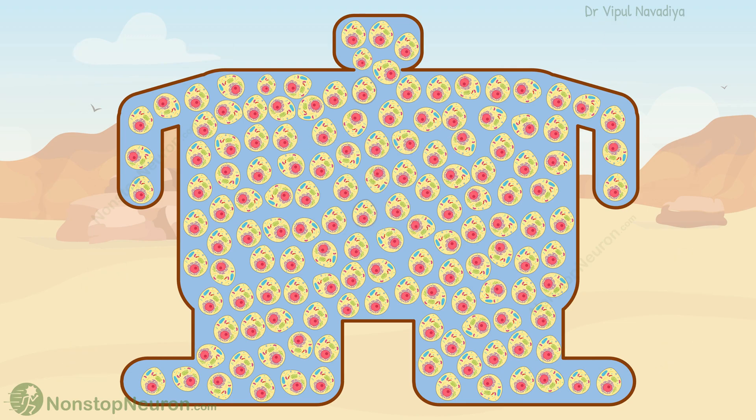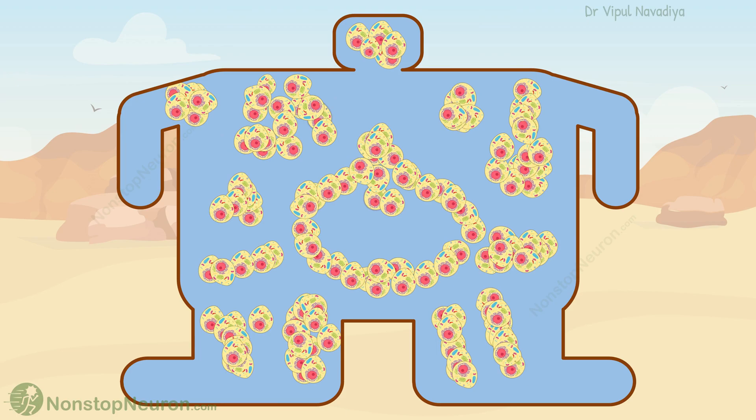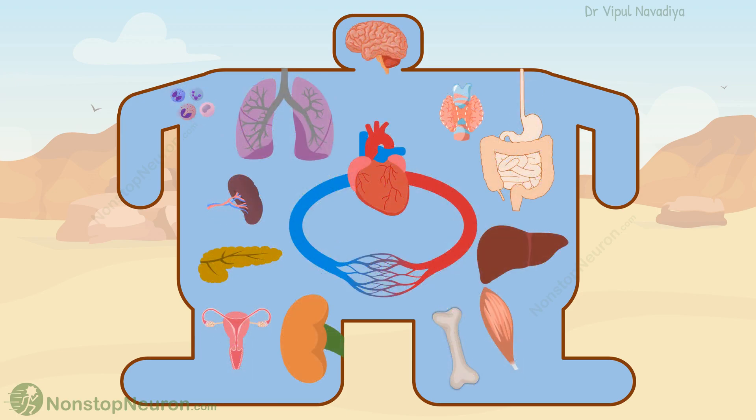For this, the cells created different teams and started specializing in their work. Eventually, this resulted in the development of different organ systems. Each organ system performs special functions that ultimately contribute to keeping the internal environment suitable for cell survival. Please note that this diagram is to explain the functional organization, so please ignore the actual anatomy for now.